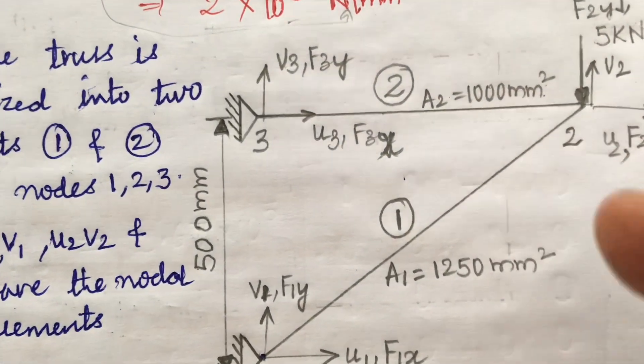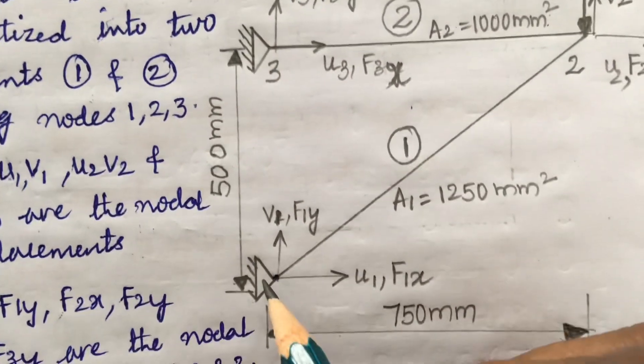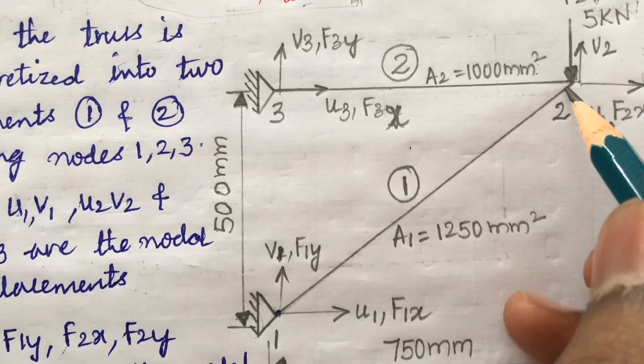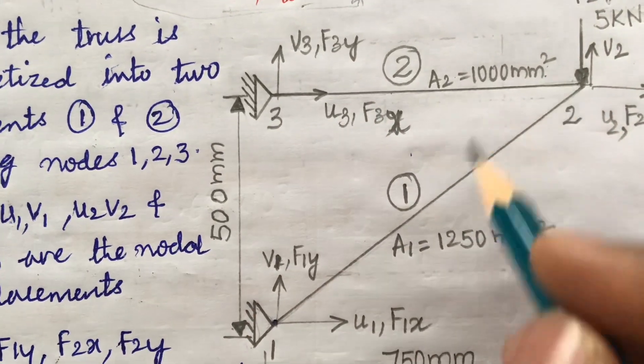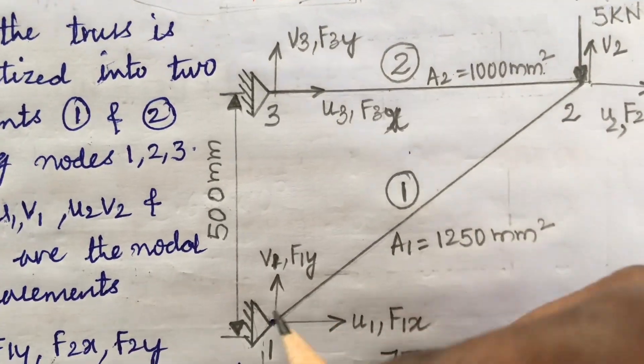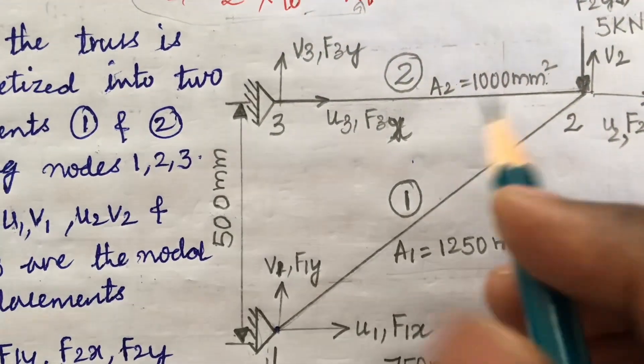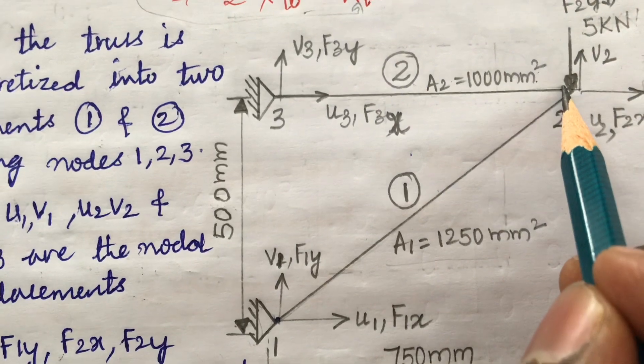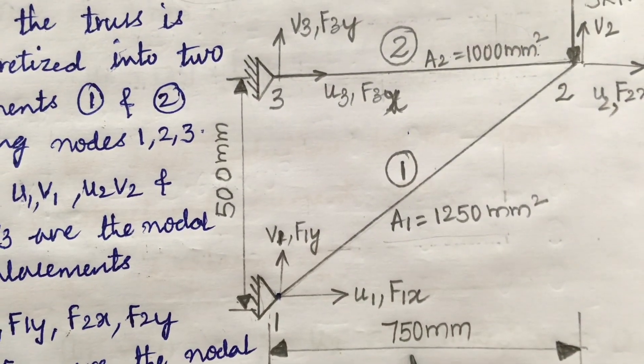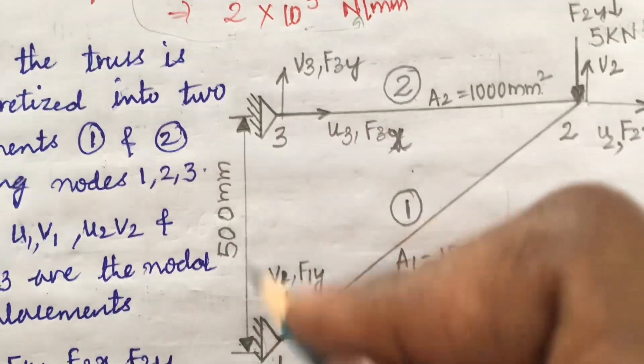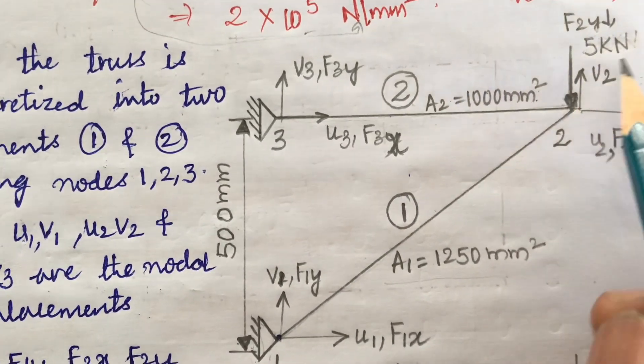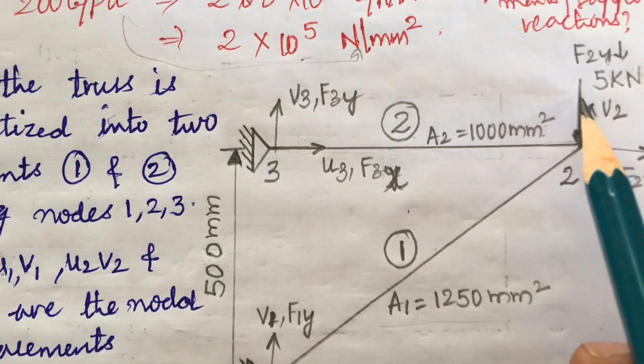Dear students, the concept is like this: they have given the truss of one element making some angle and there is one more vertical element. So these two are the bar elements where a truss is being formed. The area of this is given and the area of element two is given, and the cross-sectional area is 1250 mm² and 1000 mm².